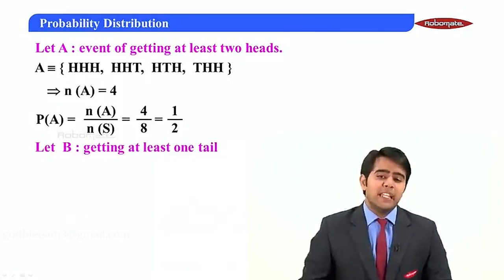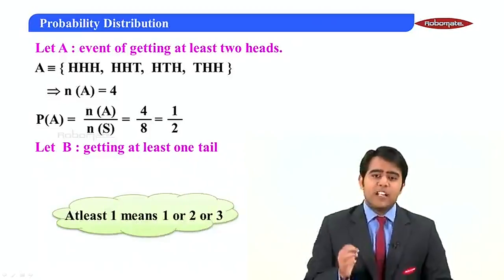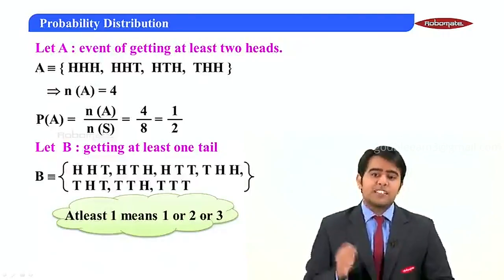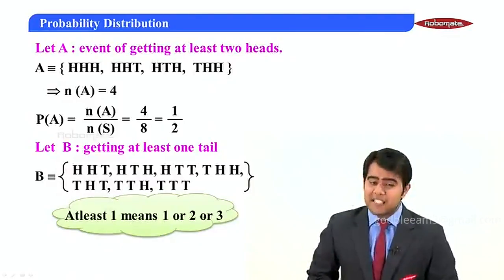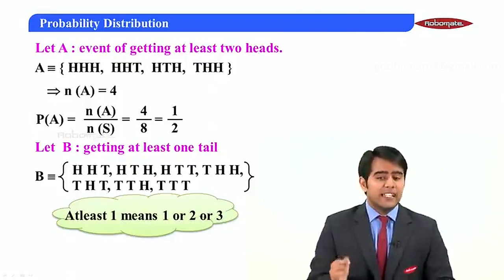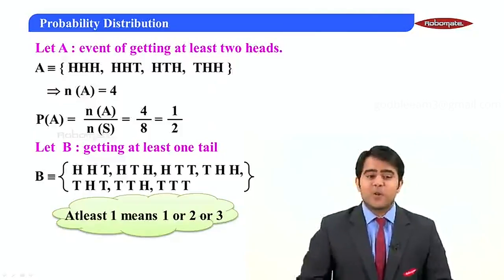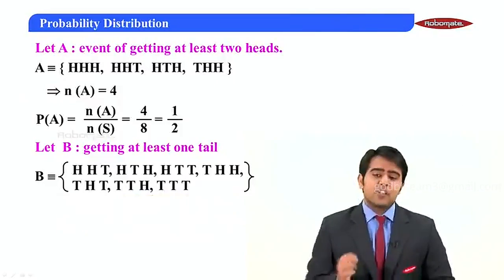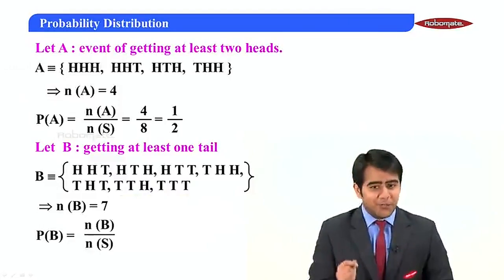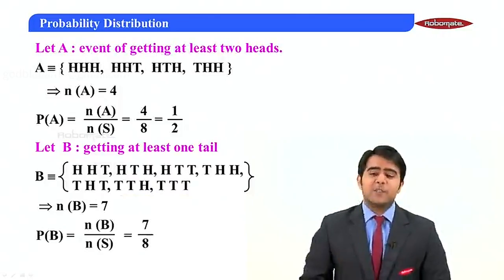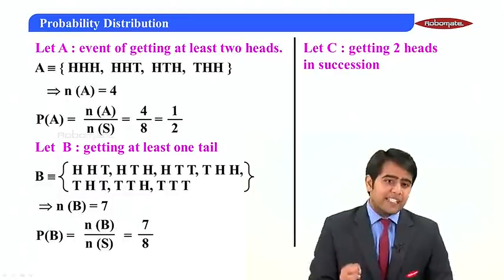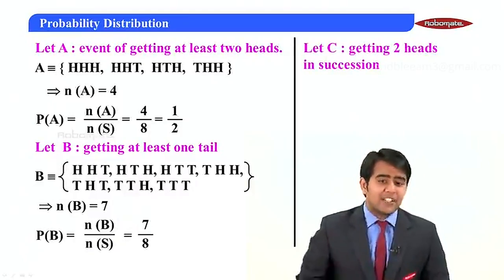For the next part, let B be the event of getting at least one tail. At least one tail means one, two, or three tails. So B = {HHT, HTH, HTT, THH, THT, TTH, TTT}, and n(B) = 7. Therefore, P(B) = n(B) / n(S) = 7/8.